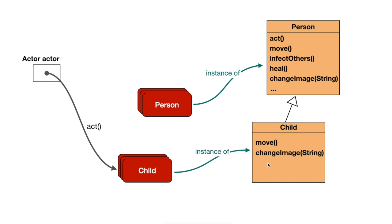Had the Child class had its own Act method, that Act method would have been executed instead. In our simulation in the previous episode, we saw that briefly. Initially, I had an empty Act method in the Child class, and when we ran the simulation, the effect was that children did not move. That is because the Act invocation invoked the empty Act method in the Child class, so the children did not do anything. By just removing this Act method, we made the Child class inherit the Act method, and the Child initially behaved exactly the same as the Person.